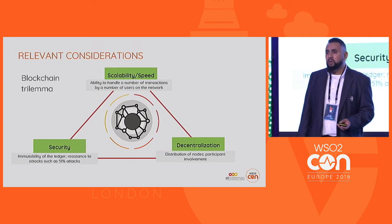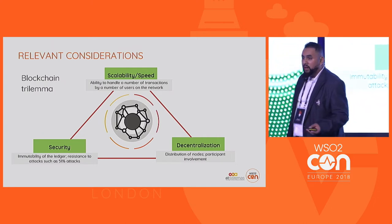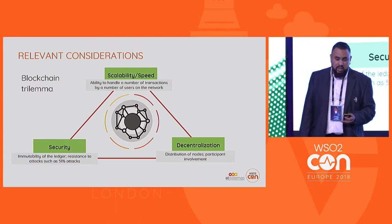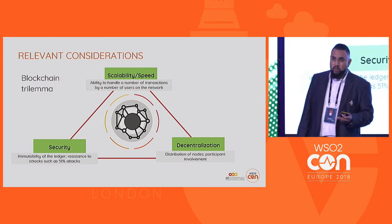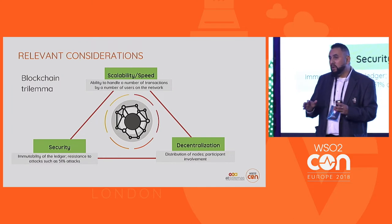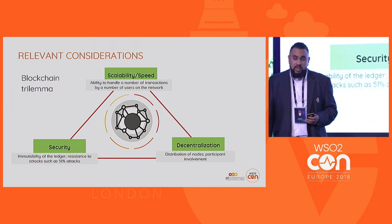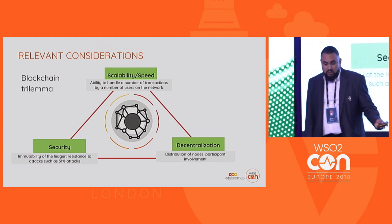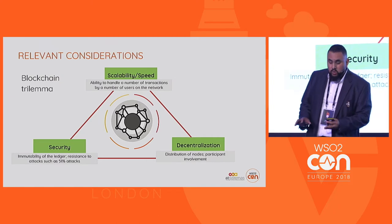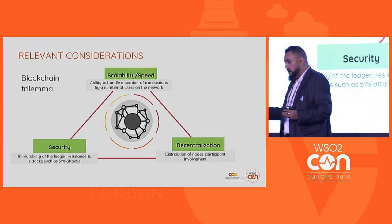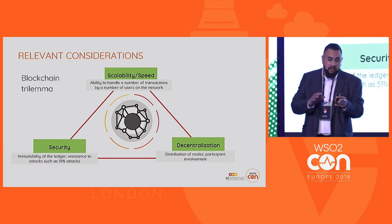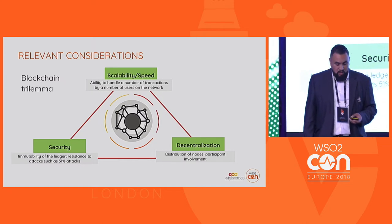Another relevant consideration is that any blockchain solution is described by three main factors: scalability/speed, security, and decentralization. It's important to keep in mind that if we want to implement a solution, we can only maximize two of these factors at the same time, and we have to sacrifice the third one. For instance, if we want great transaction speeds and high security, we have to sacrifice decentralization and keep nodes in a well-known domain.